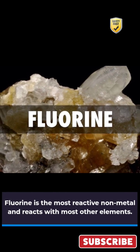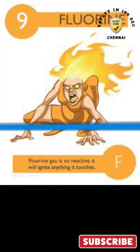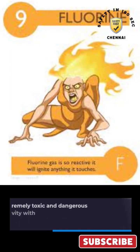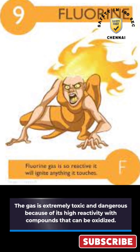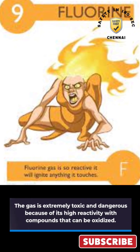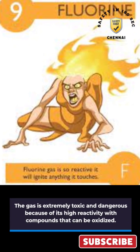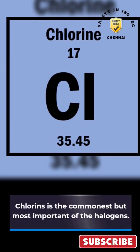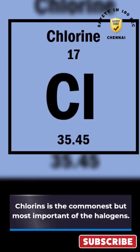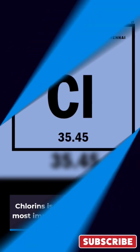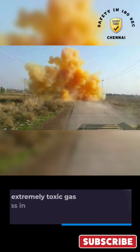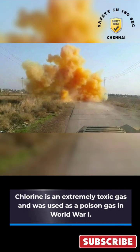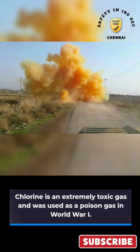Fluorine gas is extremely toxic and dangerous because of its high reactivity with compounds that can be oxidized. Chlorine is the commonest but most important of the halogens. Chlorine is an extremely toxic gas and was used as a poison gas in World War One.